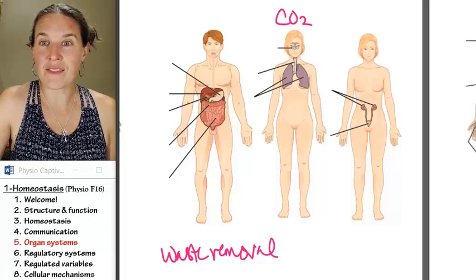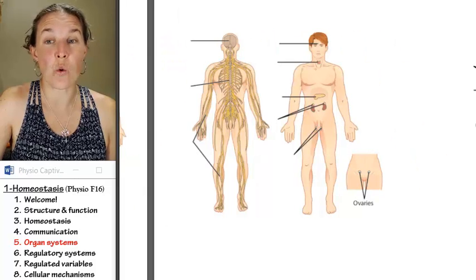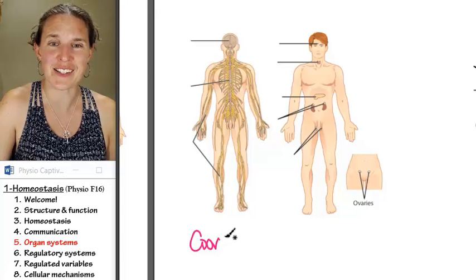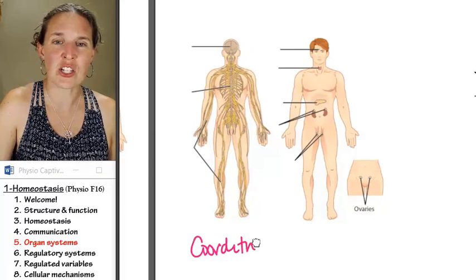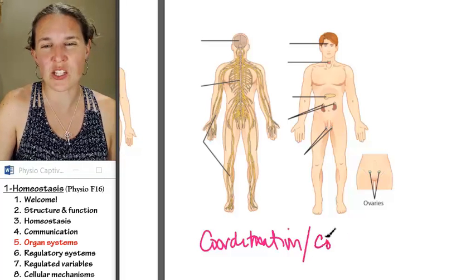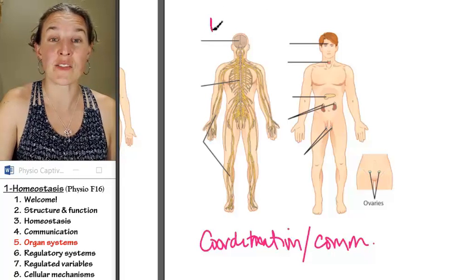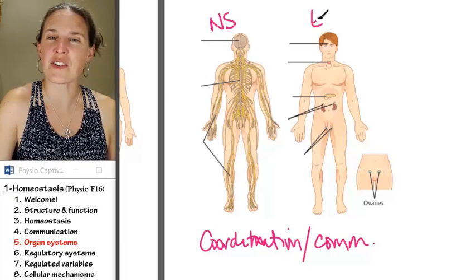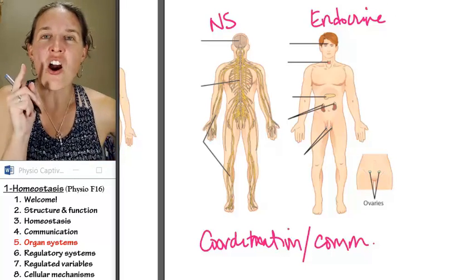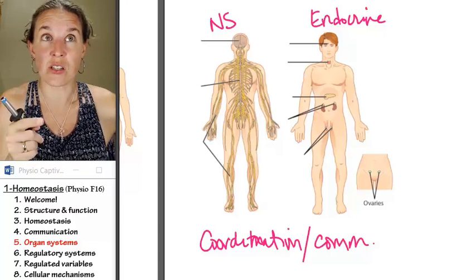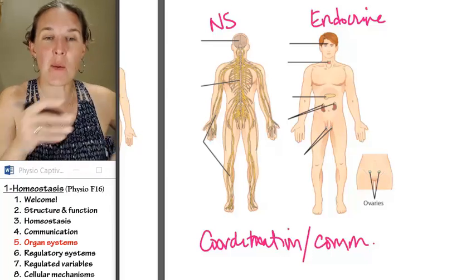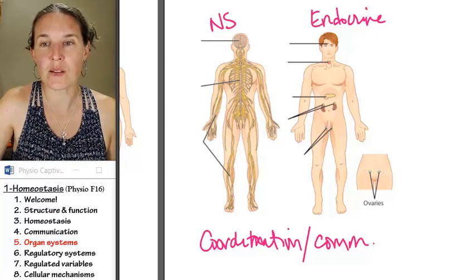Some body systems are involved in coordinating the whole thing — they are basically integrators. Coordination and communication. That is the nervous system and the endocrine system. These are your integrators, and they are instructing effectors to carry out homeostatic actions.